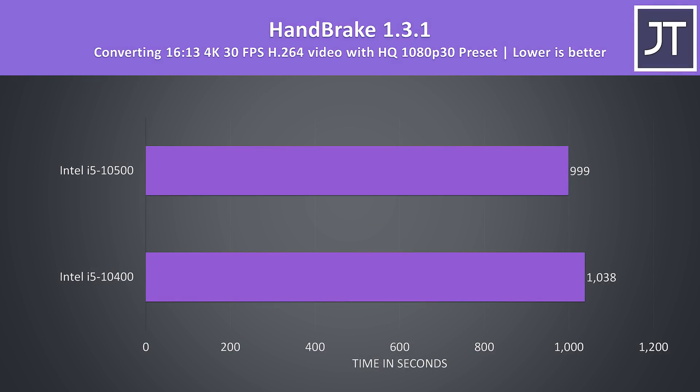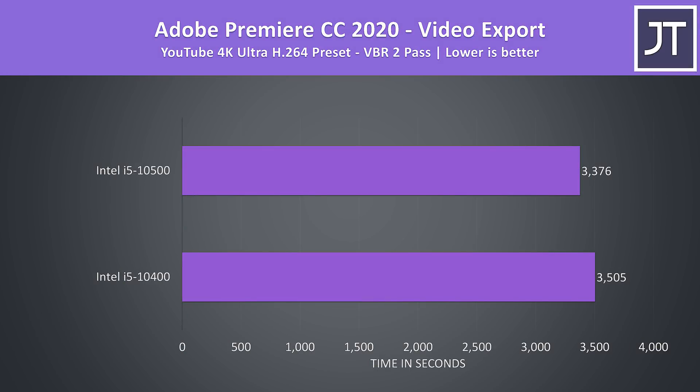Handbrake was used to convert one of my 4K laptop review videos to 1080p, and the 10500 was only completing the task 4% faster, so not much difference at all. Adobe Premiere was used to export one of my laptop review videos at 4K using VBR 2-pass so no iGPU usage, and again the 10500 was only able to complete the task around 4% faster.